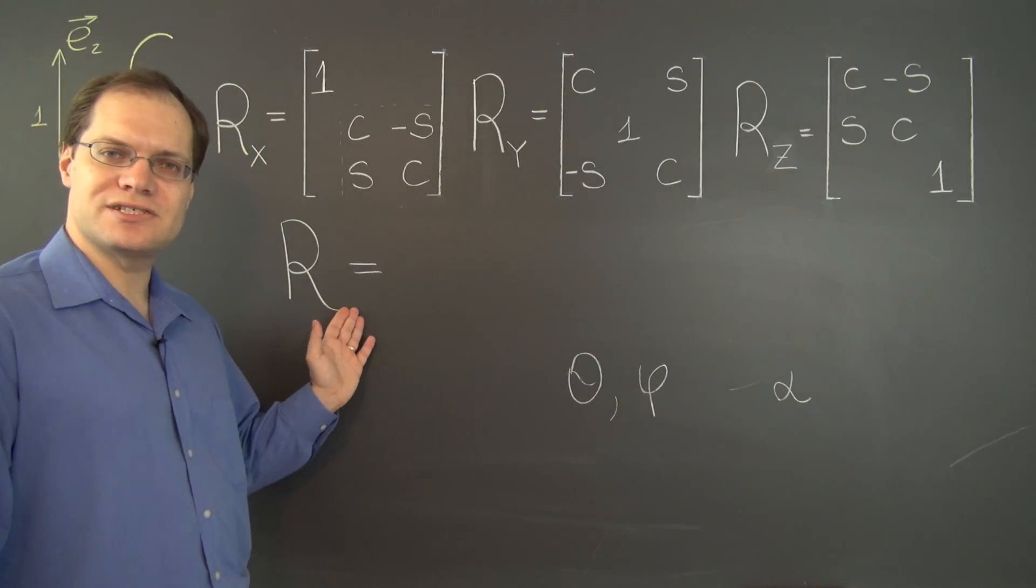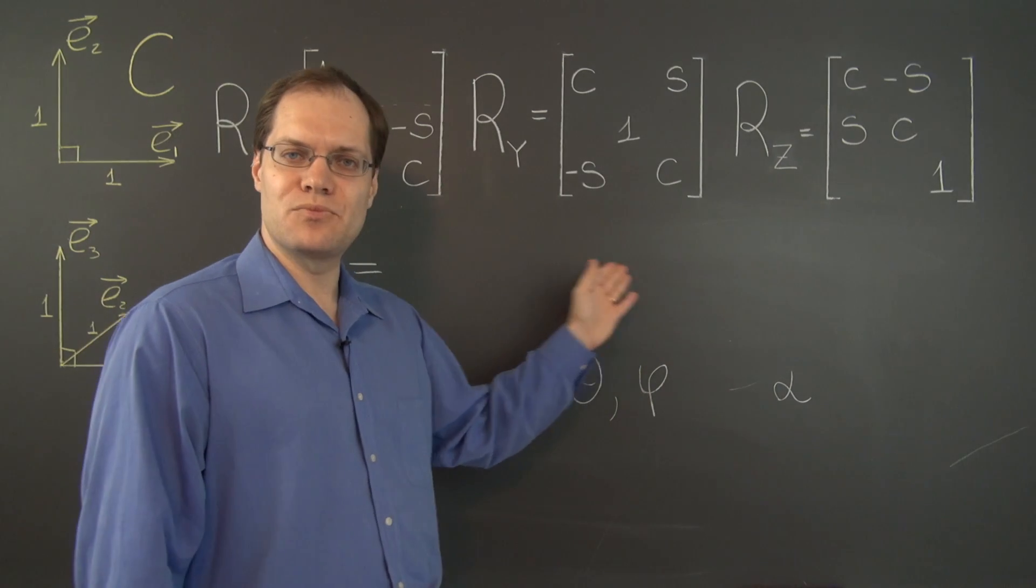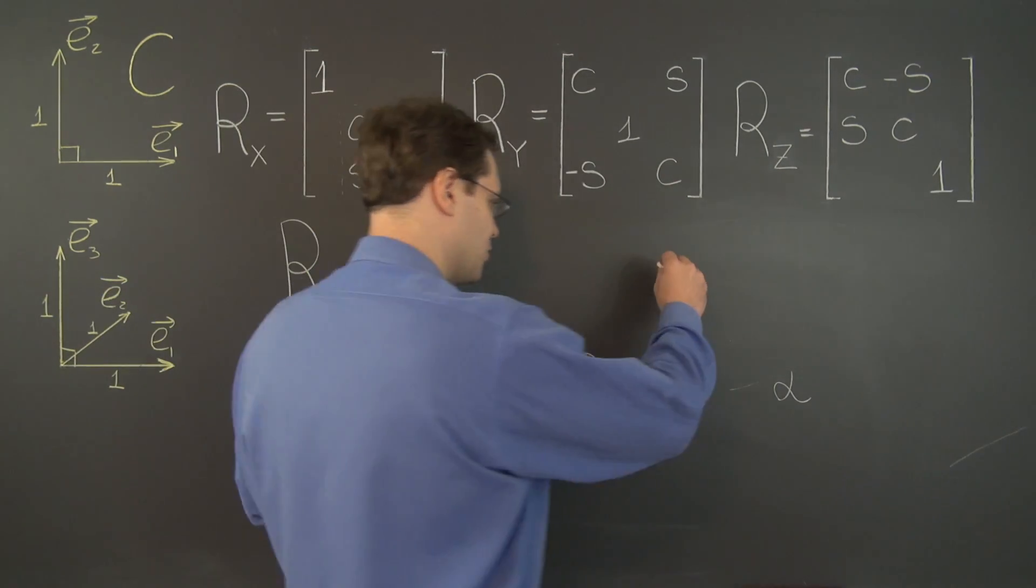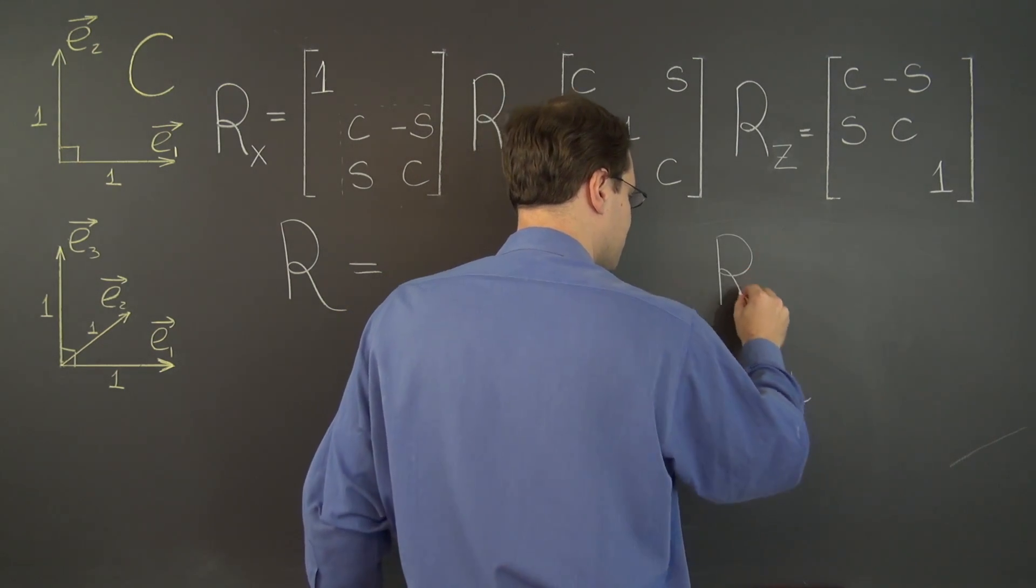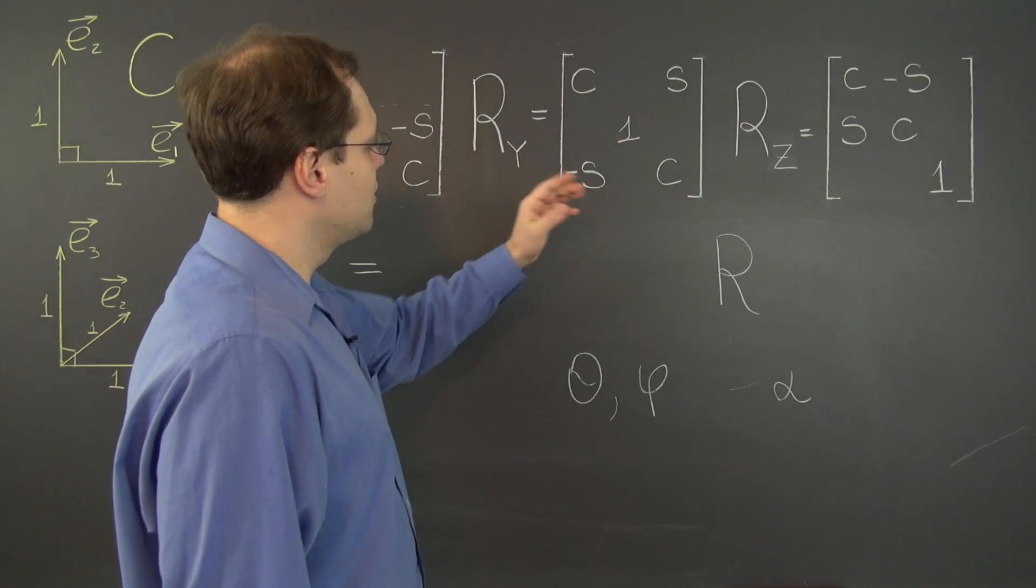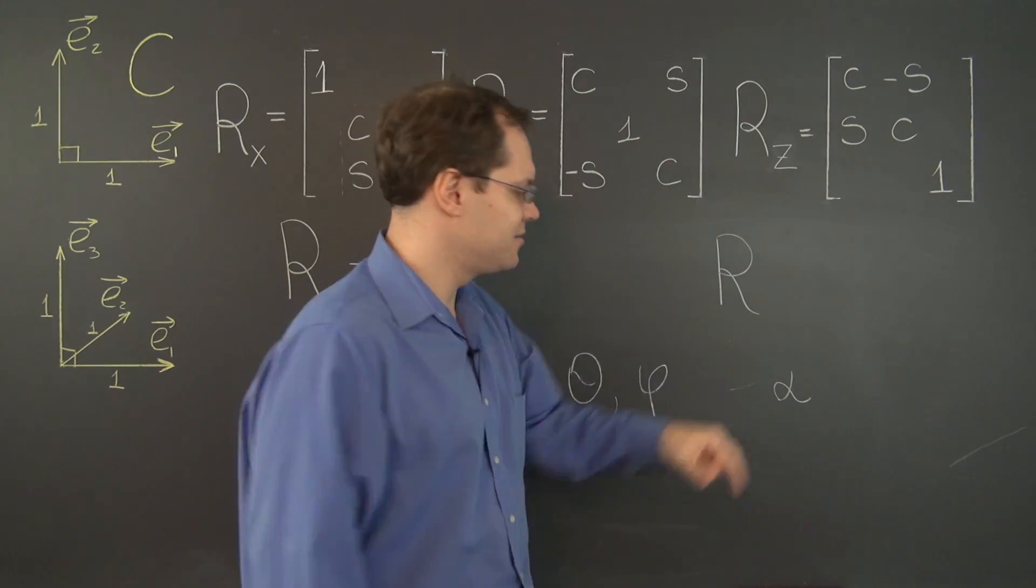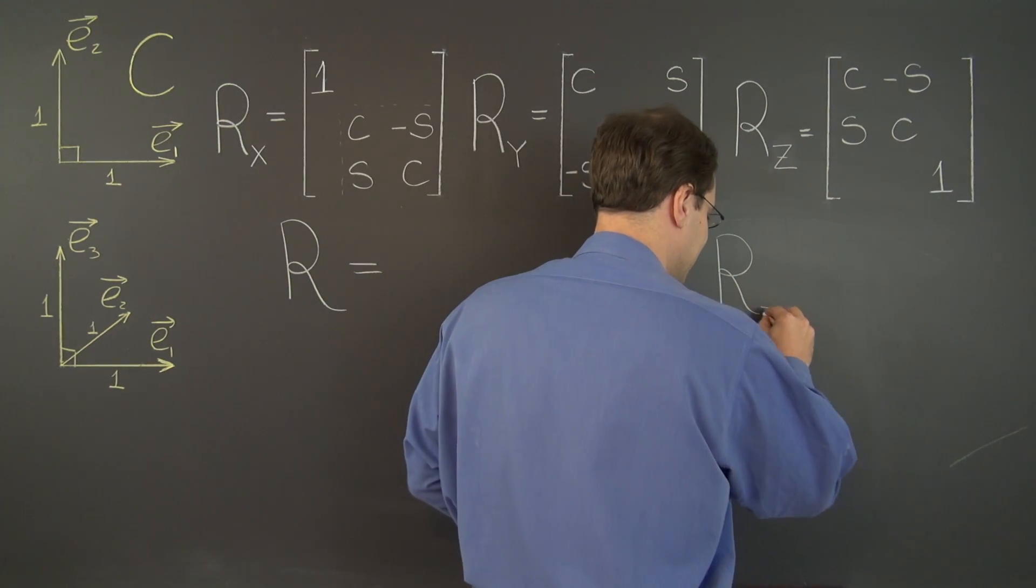And as we combine them into a single matrix, we have to write them from right to left, of course. So, it's hard to judge the space, but I'll start over here. So, the first step is to unswing the axis by the angle phi.